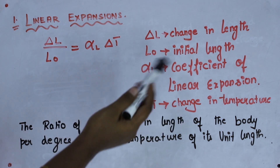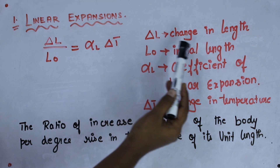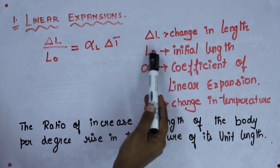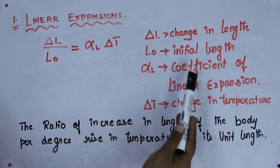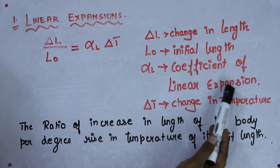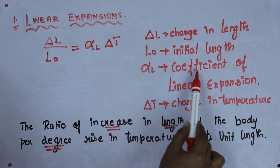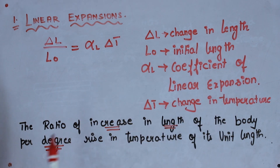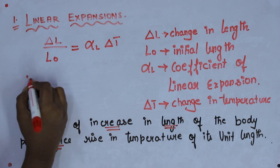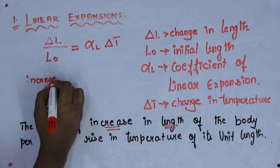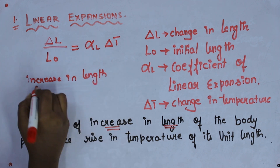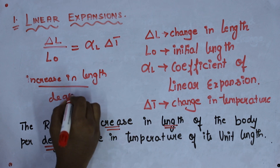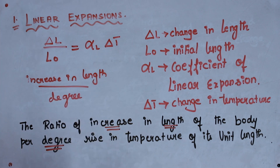For clarification: delta L is the change in length, L₀ is the initial length, and alpha L is the coefficient of linear expansion. The coefficient of linear expansion is defined as the increase in length per degree rise in temperature.